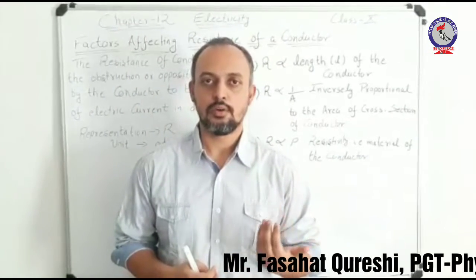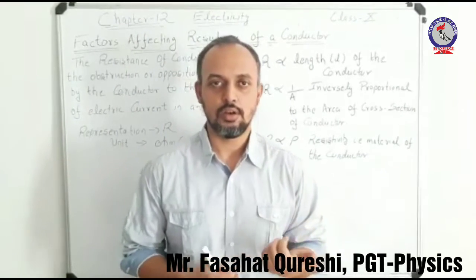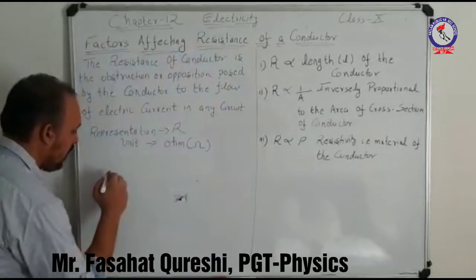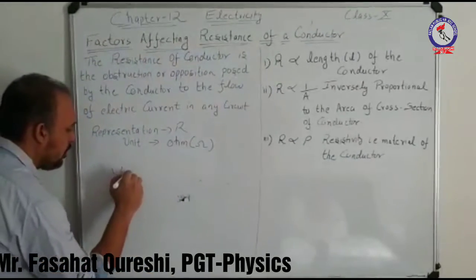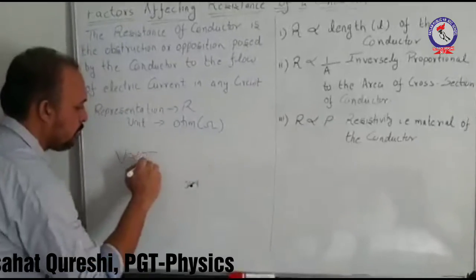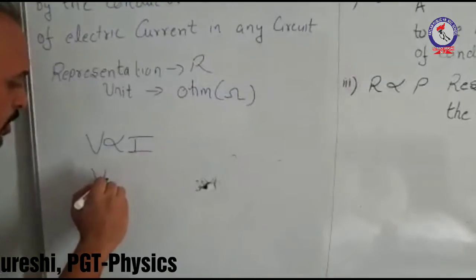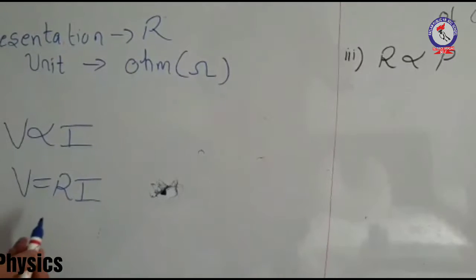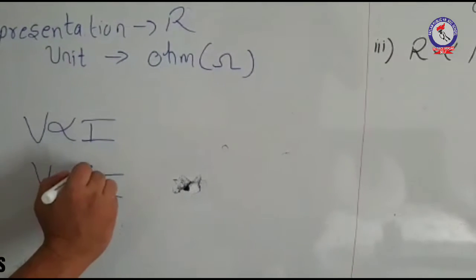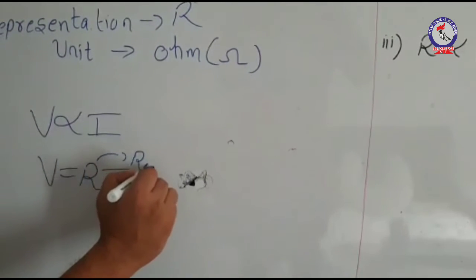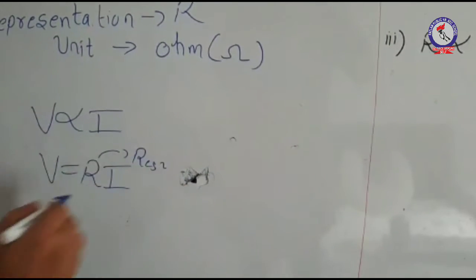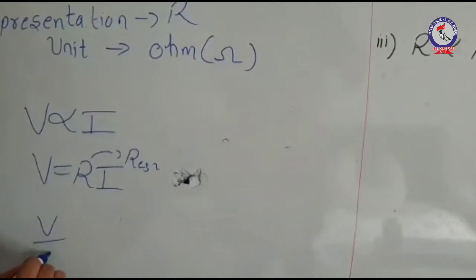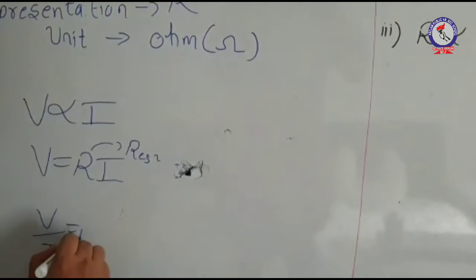Under Ohm's law, you have studied that resistance is a constant. I will again write the concept of Ohm's law which we have gone through: potential difference was directly proportional to current. Converting the proportionality to equality, we have taken a constant R, where R is the resistance of the conductor.